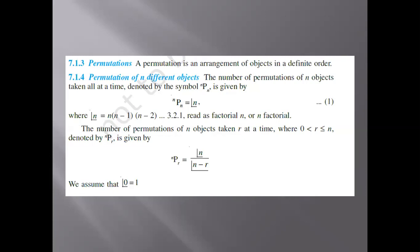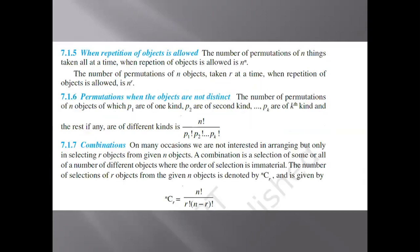The number of permutations of n objects taken r at a time, where r lies between 0 and n, is denoted by nPr and is given by: nPr = n! divided by (n − r)!. We assume that 0! equals 1.